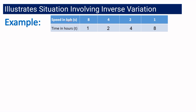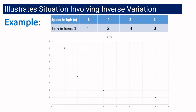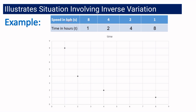Using our table of values, let us see the graph of an inverse variation. If the speed is 8, then the time is 1. If the speed is 4, then the time is 2, and so on. If we connect the points, this is how the graph will look like. The graph of direct variation is a straight line, but as you can see here, the graph of an inverse variation is a smooth curve.